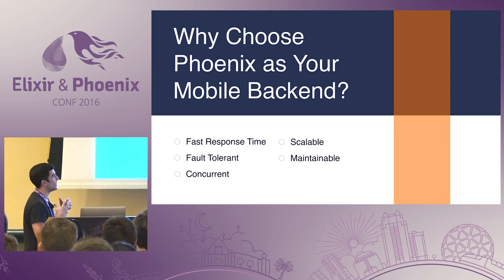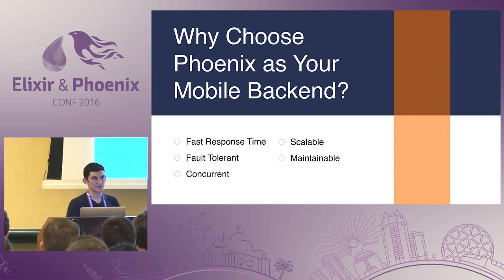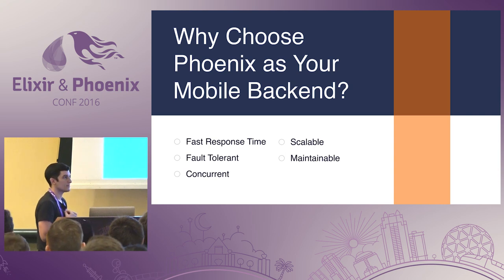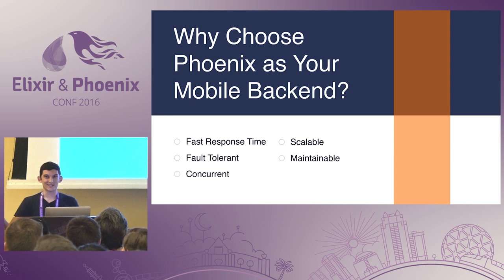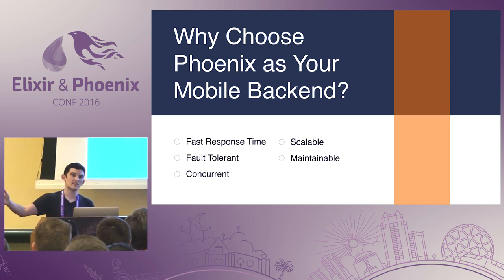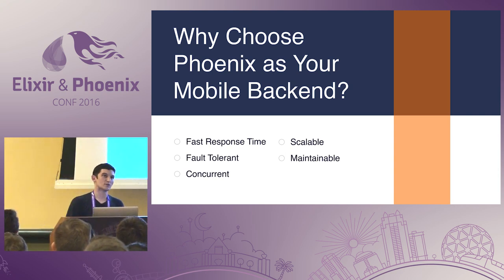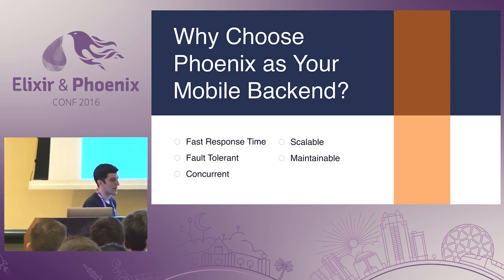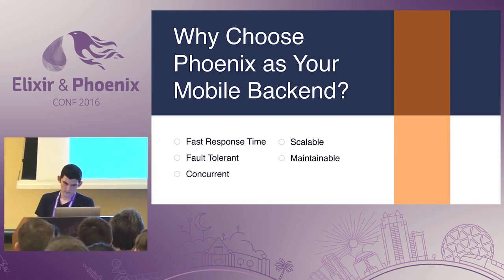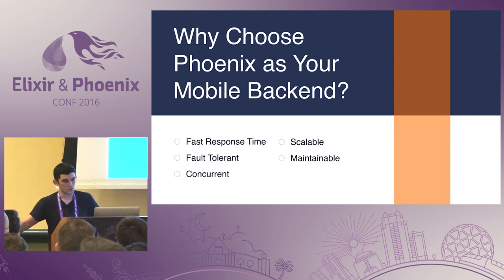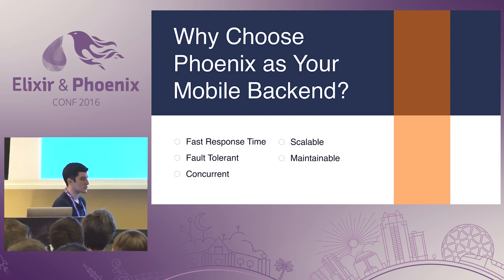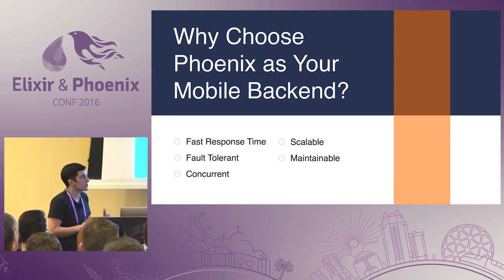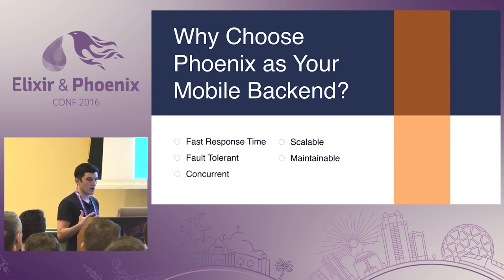The next thing I want is fault tolerance. What does this mean for my app? If I have millions of users and user 1,027 encounters a problem — some process they have running encounters a problem — I want all other users to continue having a great experience. And in a perfect world, that user would also continue to have a great experience. Without really delving in, Elixir and ultimately Phoenix comes with a strategy that allows me to tell failing processes what strategy I want them to use to hopefully continue allowing the user to use my app.